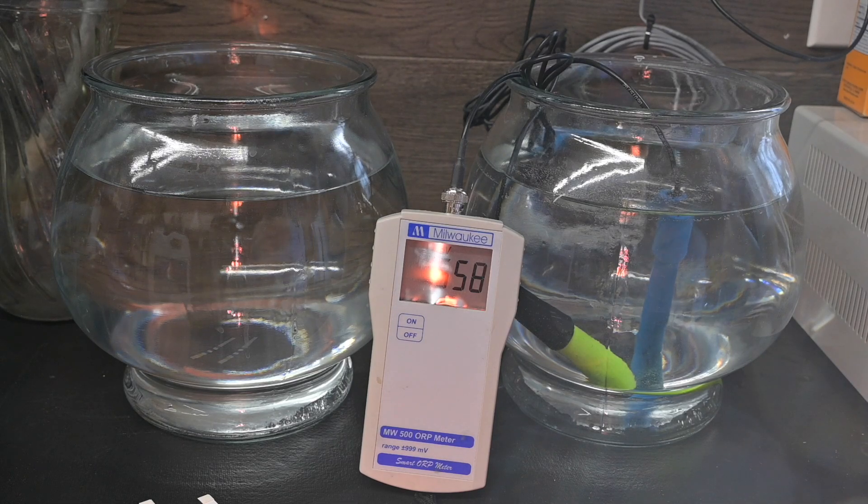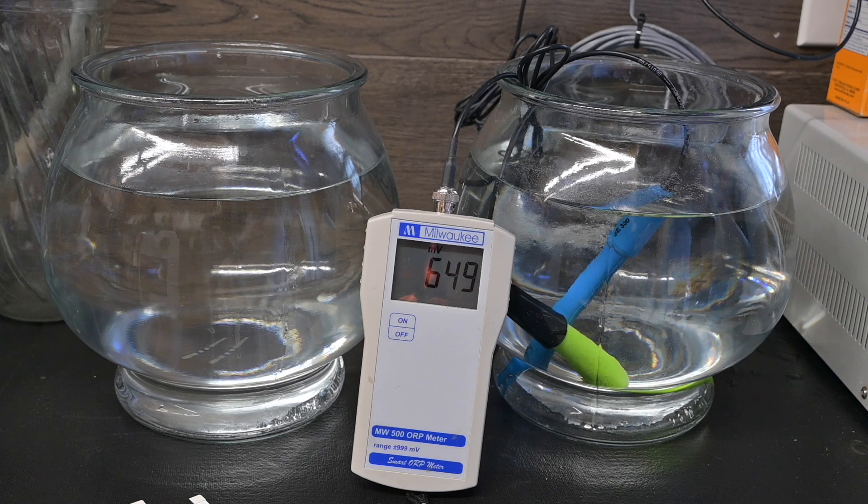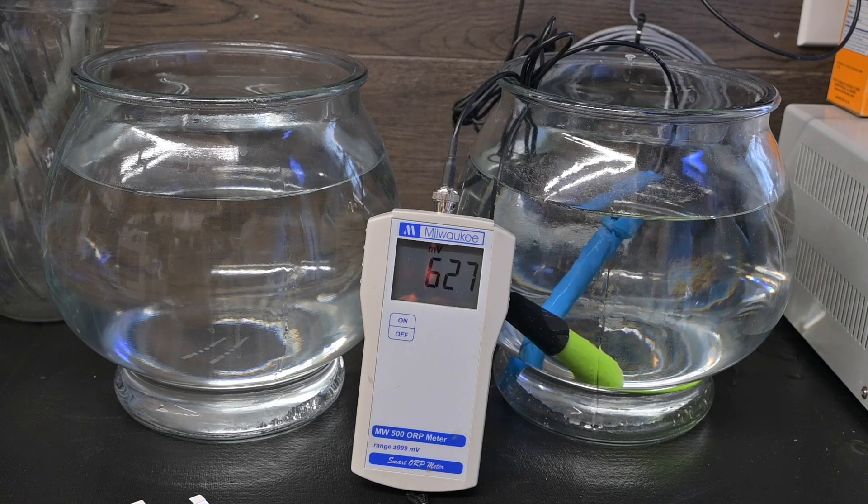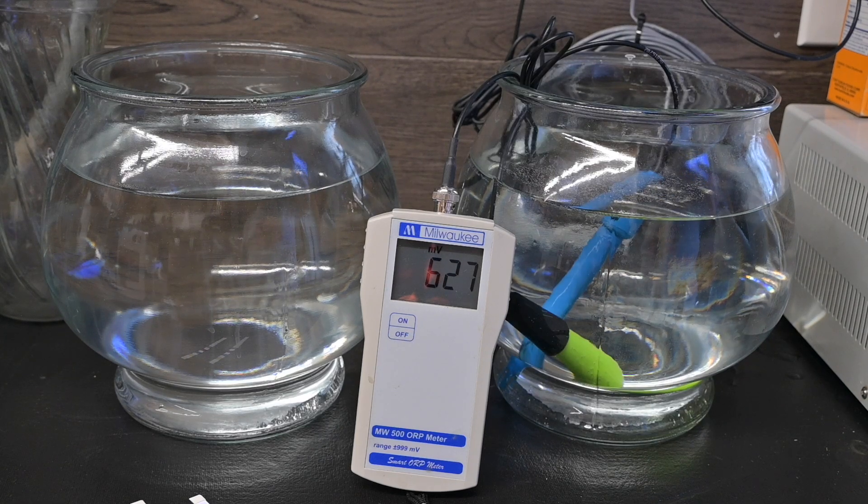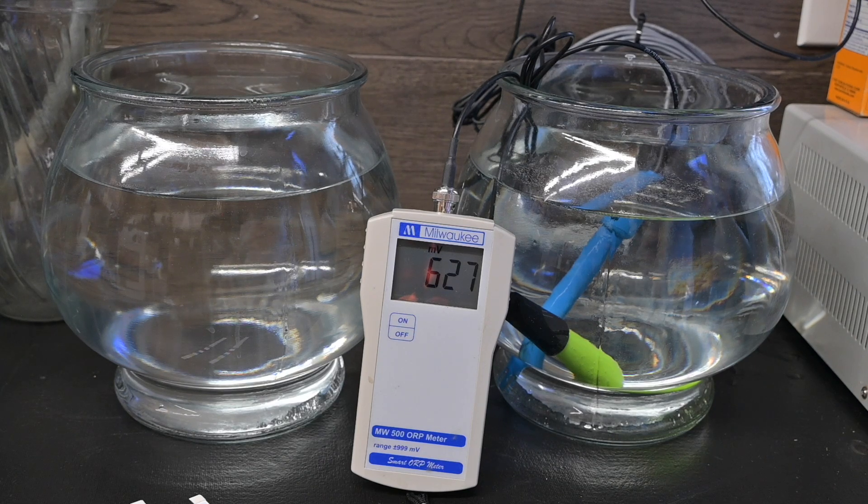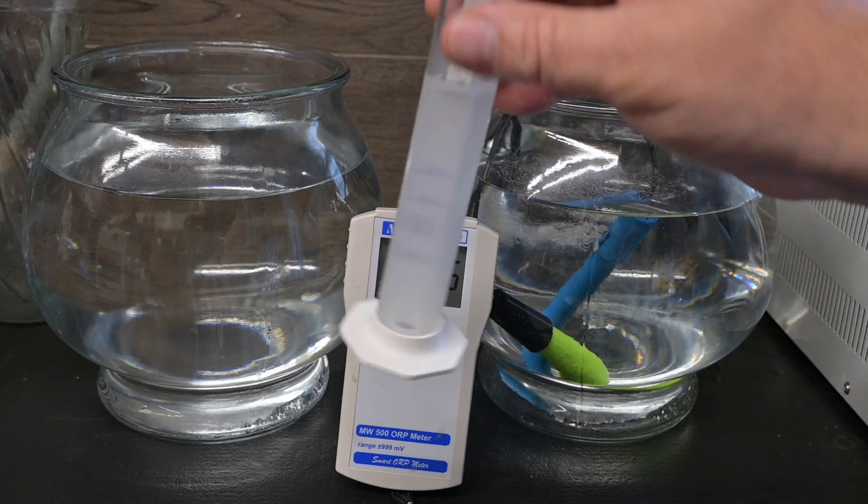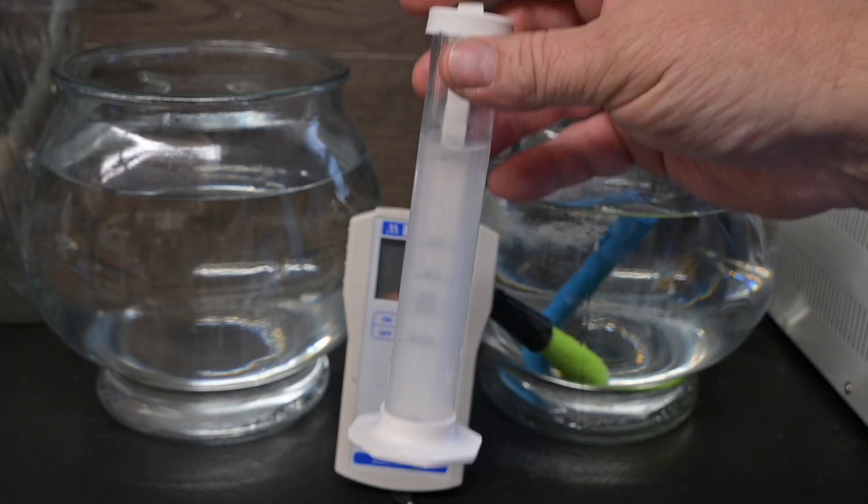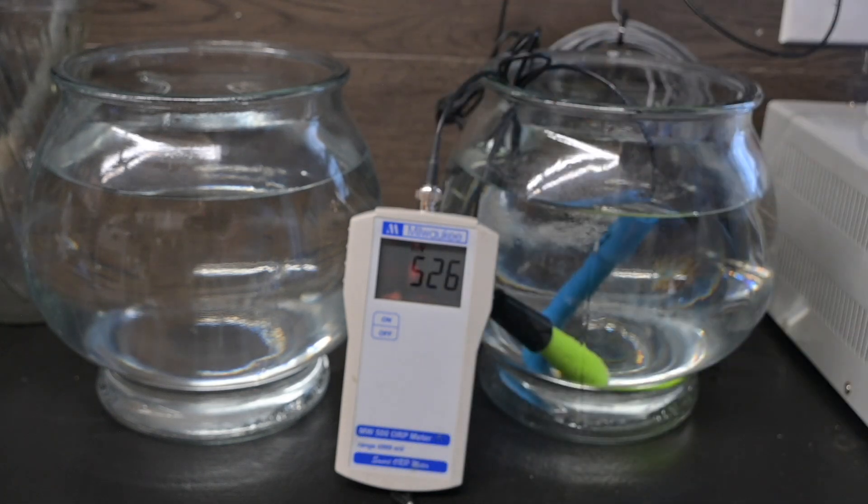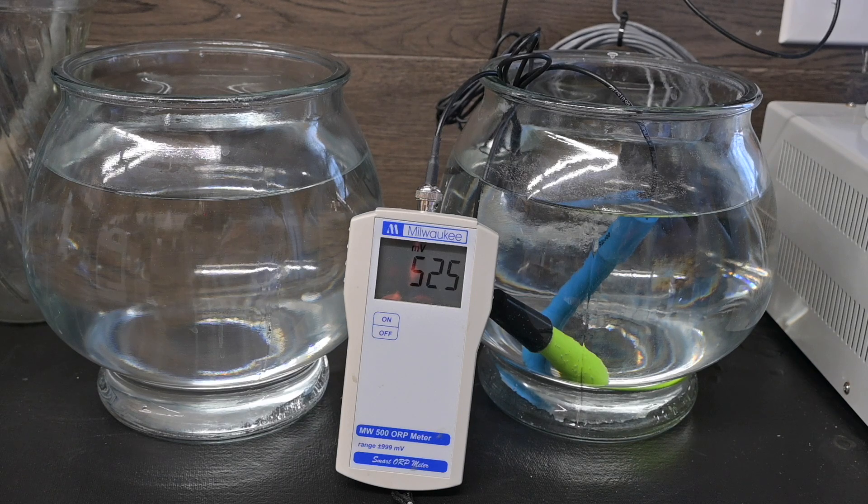650 is the very minimum and we started out at about 750. Now we have 50 parts per million cyanuric acid and we're down to 658 millivolts. Now we're at 60 parts per million and dropped to 649 millivolts. At 80 parts per million we dropped to 627 millivolts. We got 100 parts per million on the conditioner test and we dropped to 525 millivolts on the ORP.